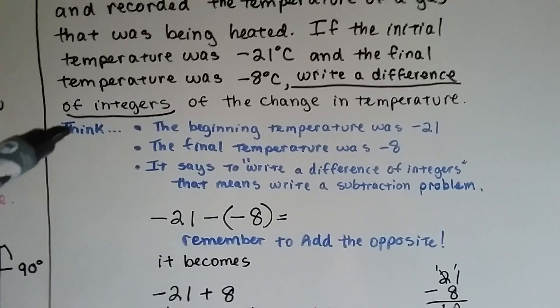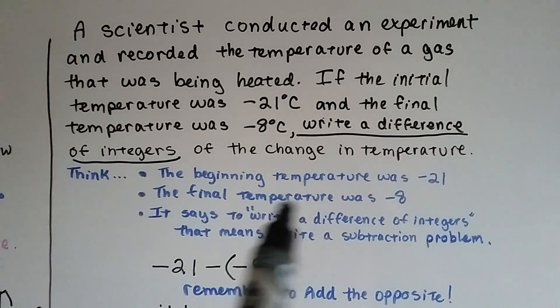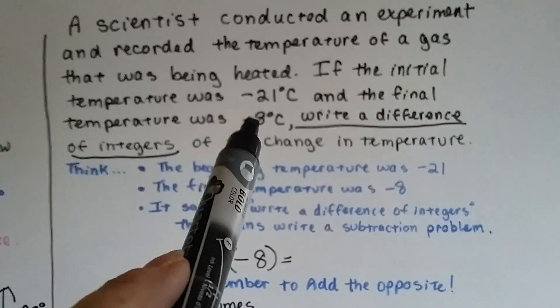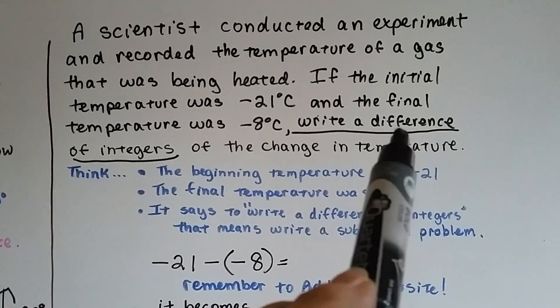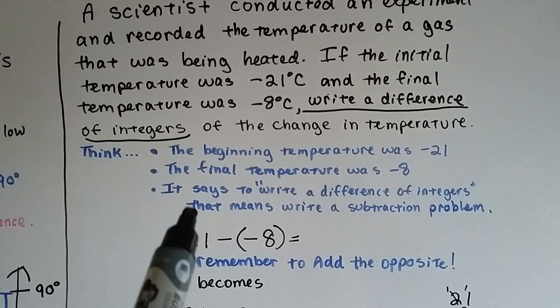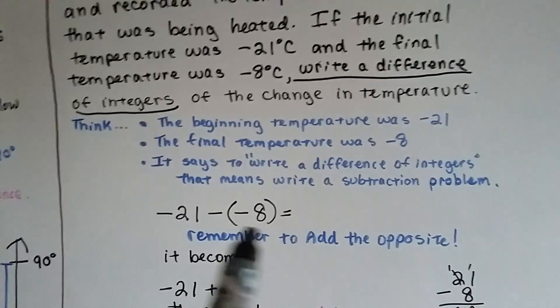So we need to write a difference of integers of the change in temperature. So we think, okay, in the beginning the temperature was negative 21, right? And the final temperature was negative 8. And it's a subtraction problem that we need to find the difference of the integers. So, it says write a difference of integers. It means a subtraction problem.